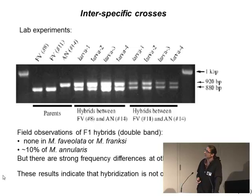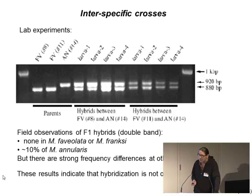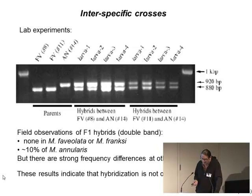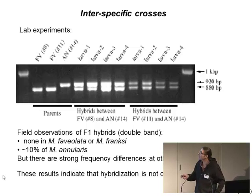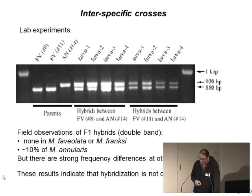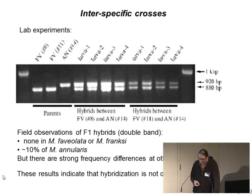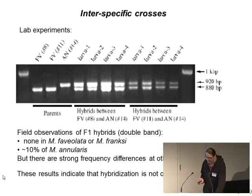Looking at work that Fukami and co-workers have done on fertilization experiments and looking at the potential for hybridization in the lab: if faveolata is crossed with the other two species — faveolata was homozygous for the 880 allele, while the other two were homozygous for the 920 allele — the offspring have both alleles, so they're heterozygous, shown by double bands. But in the field, you don't really find F1 hybrids in Montastraea faveolata or franksi. You do find them in annularis, but in only about 10% of individuals. This, coupled with strong frequency differences at other loci, suggests that gene introgression isn't occurring very frequently today.